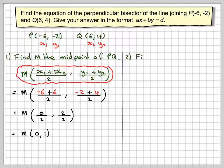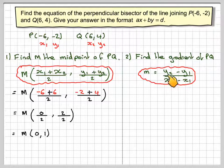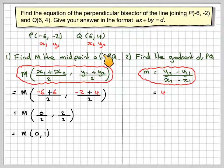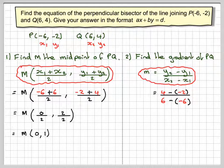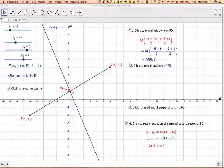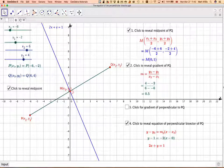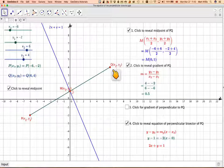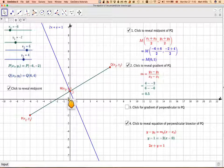Step two: find the gradient of PQ. Using the formula (Y2 minus Y1)/(X2 minus X1), we get (4 minus minus 2)/(6 minus minus 6), which gives (4 plus 2)/(6 plus 6) — be careful with the minus signs. That's 6 over 12, which cancels down to one half. Looking at the graph, for every two squares along, we go up 1, confirming a gradient of one half.